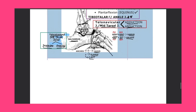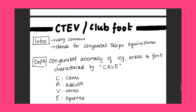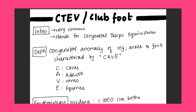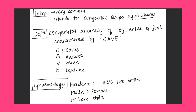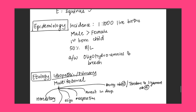Now coming to CTEV properly — clubfoot. It is very common and stands for Congenital Talipes Equinovarus. The definition: it is a congenital anomaly of the leg, ankle, and foot characterized by the mnemonic CAVE — C for cavus, A for adduction, V for varus, E for equinus.